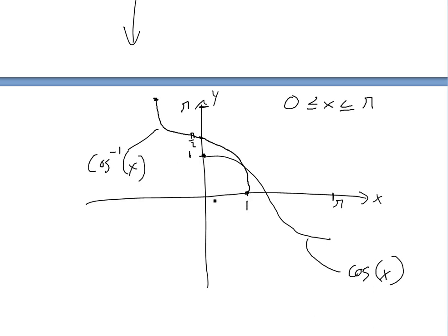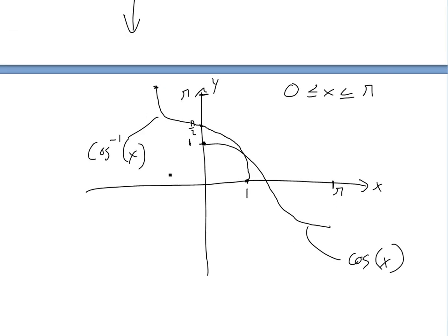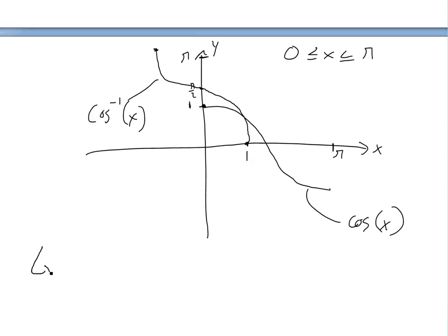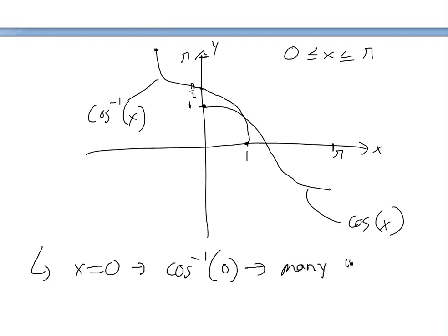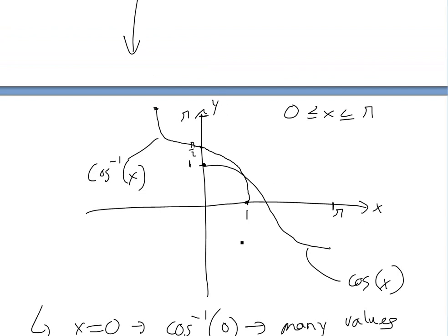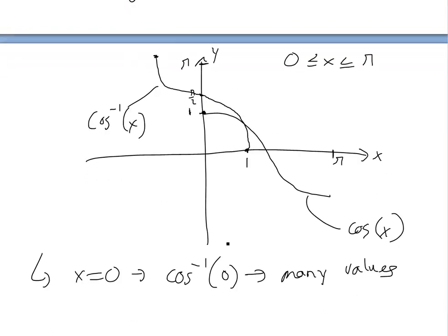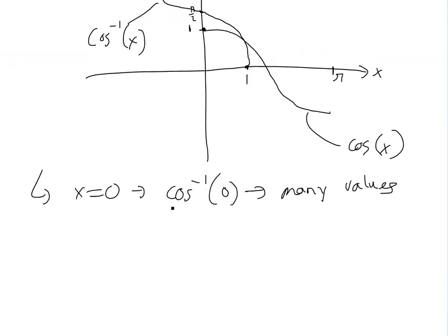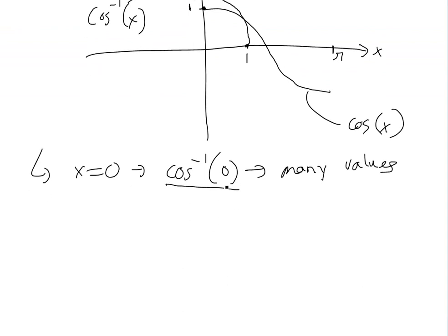So the reason why we restrict is: if you pick one value of x, say x equals 0, then cosine of 0 would have many values — that's not a function. It's not a one-to-one function, and you're going to have many values. You can't put it in a calculator because you'd get infinite numbers. It needs to have one unique value, so that's why we restrict.